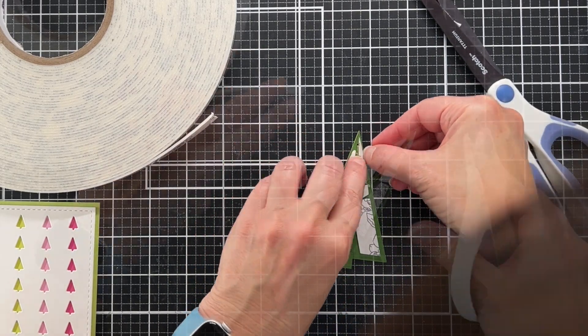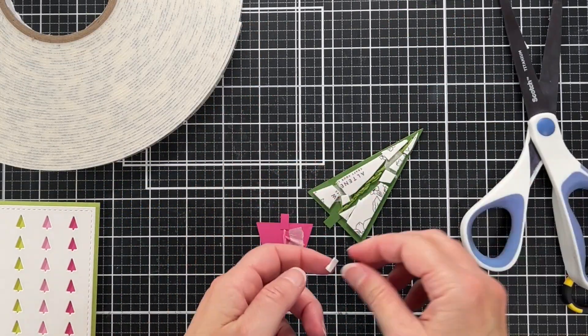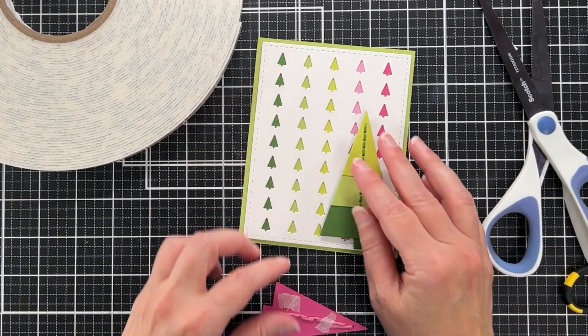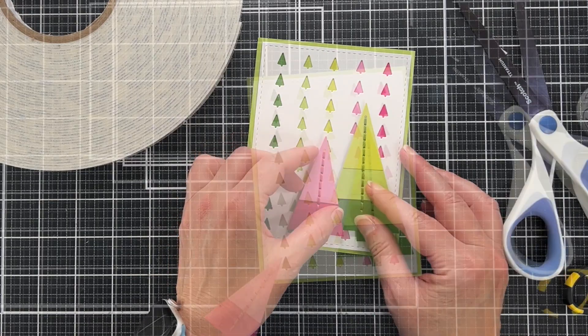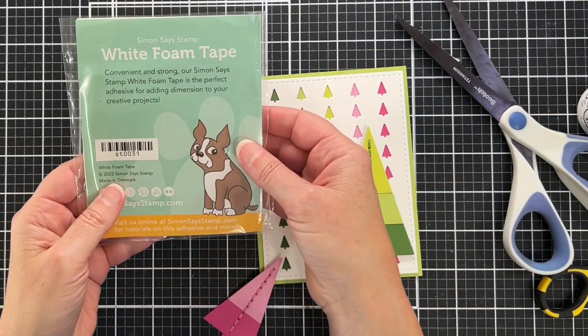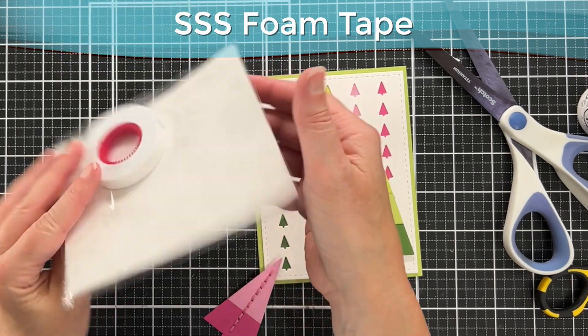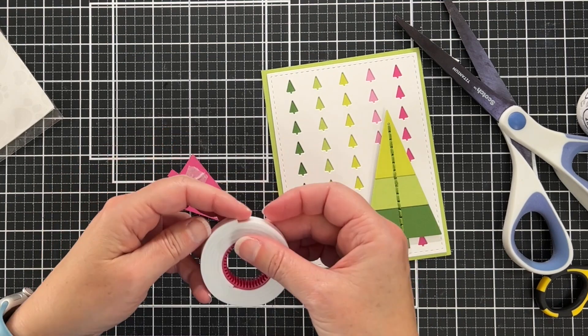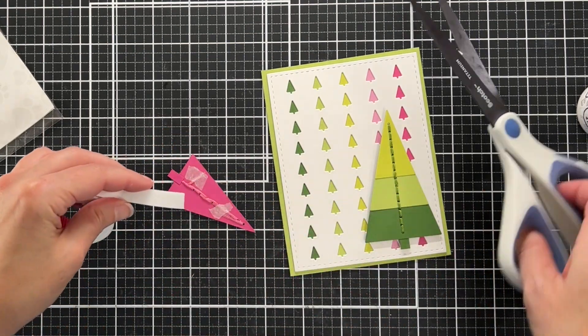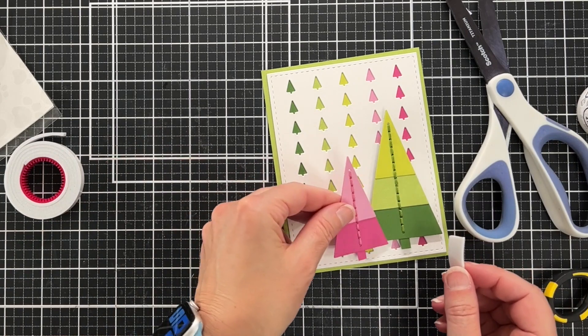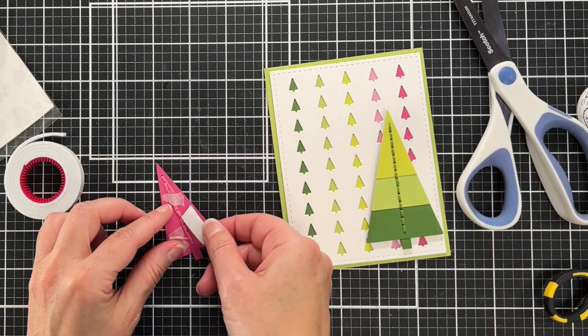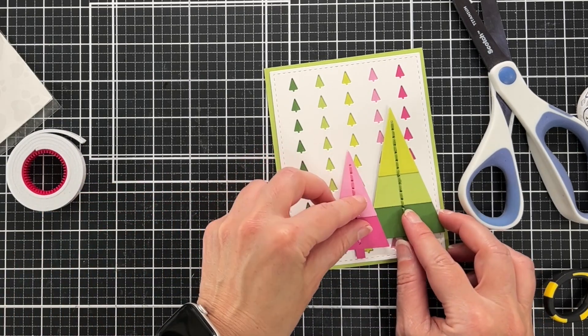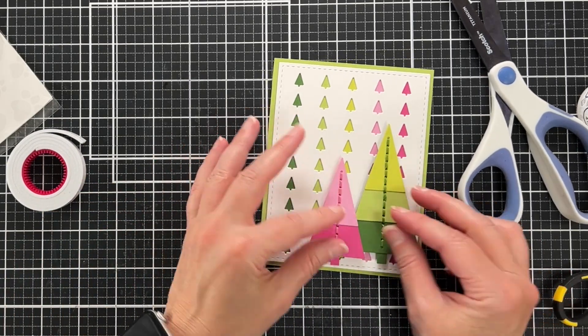For the pink tree, I need it to be a little bit higher. So this is foam tape from Simon Says Stamp, and this is thicker than the Altenew foam tape. This will help me because the pink tree is going to overlap the green tree a little bit. I'm just trying to figure out where to put the foam tape on the pink tree.